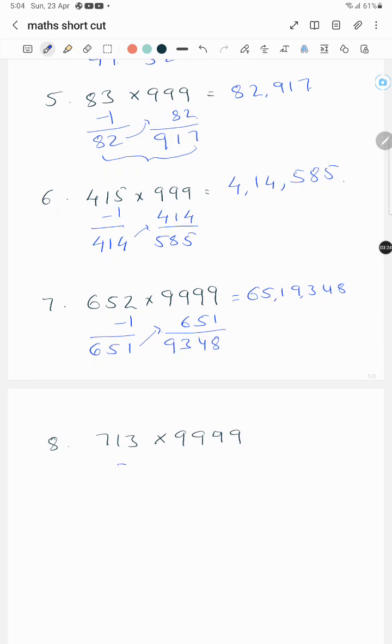And let's see the last example. 713 into 9999. Subtract 1, you get 712, and subtract this 712 from 9999, you get 9287. Concatenate these to get 712,9287, which is 7,129,287.